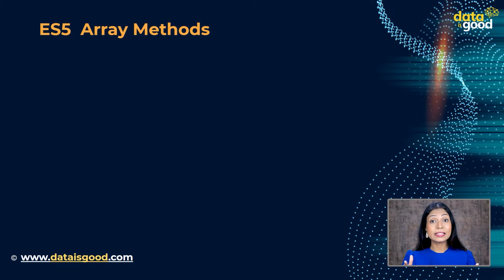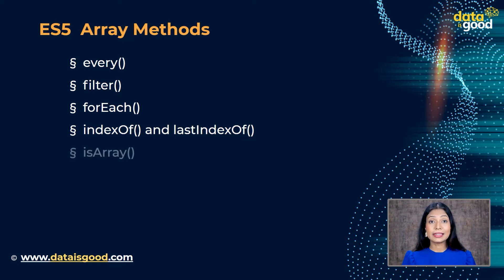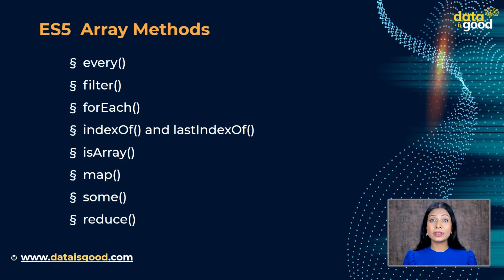In that example, we declared a variable x without writing var at the beginning. Due to the ES5 'use strict' specification, an error is thrown. ES5 also introduced new array methods that made life easier when working with arrays. Some of these methods are: every, filter, forEach, indexOf, lastIndexOf, isArray, map, some, and reduce. ES5 also has two new date methods: Date.now() and Date.valueOf(), which we shall learn about in detail in further lectures.